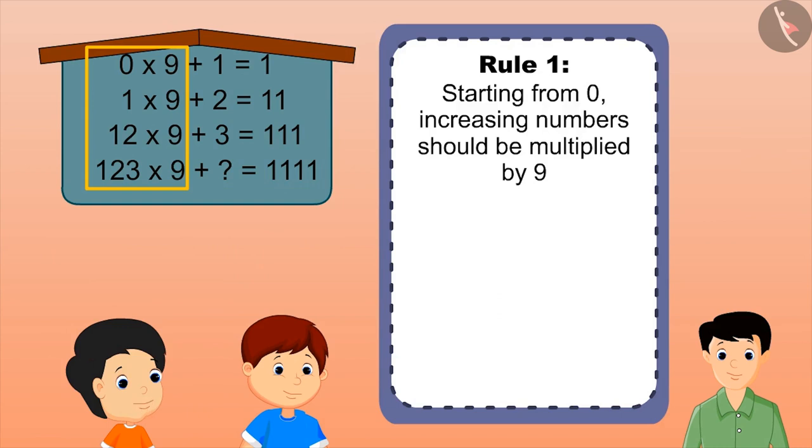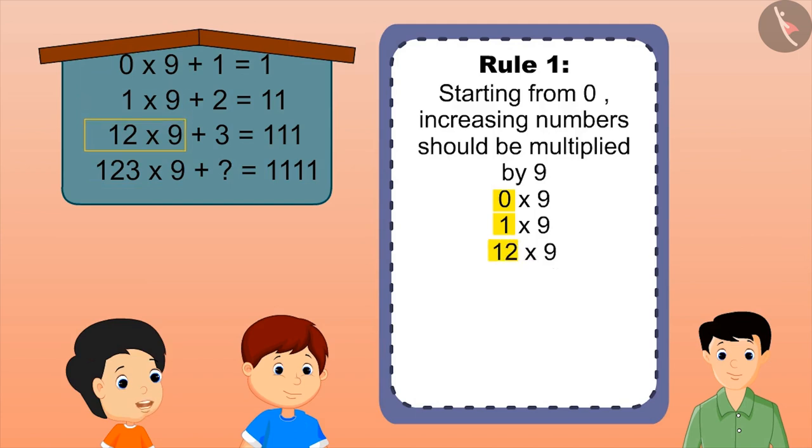Number 9 is multiplied each time on the left side. First multiplied by 0, then by 1, then by 2 digit number that is 12. So by following this rule, the next number will be a three digit number, that is 123, which would be further multiplied by 9.